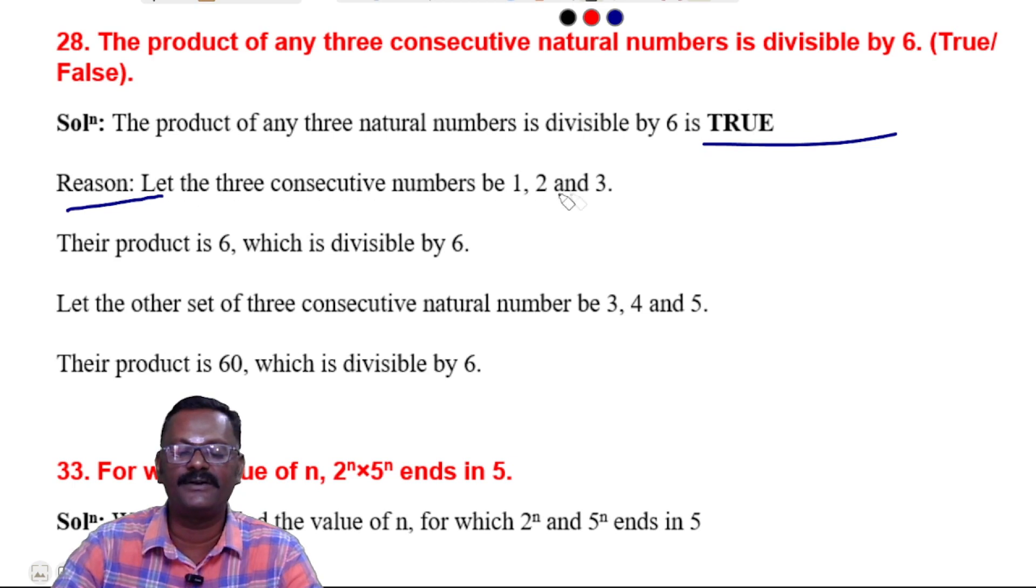Let the three consecutive numbers be 1, 2, and 3. The product will be 6, which is divisible by 6. Let the other set of three consecutive numbers be 3, 4, and 5. The product will be 60, which is divisible by 6. Hence, the statement given is true.